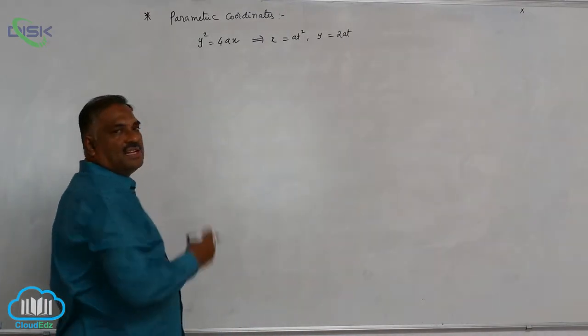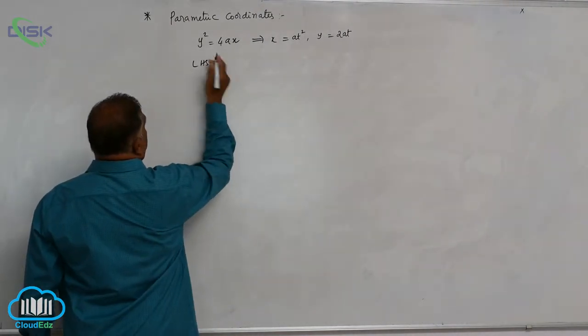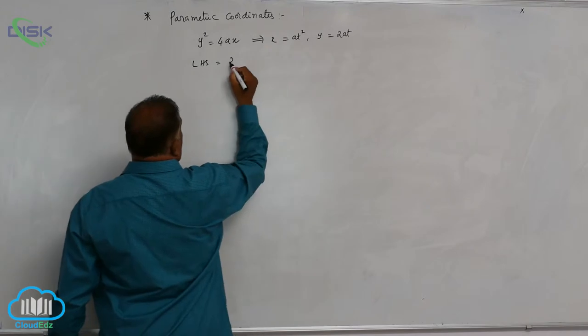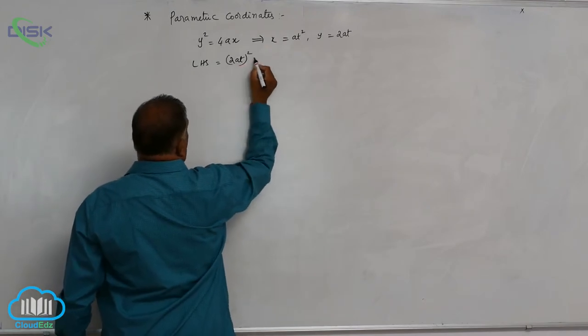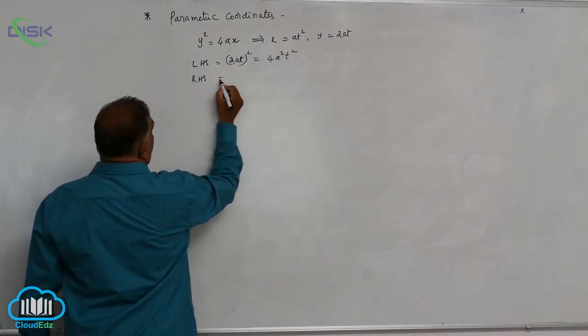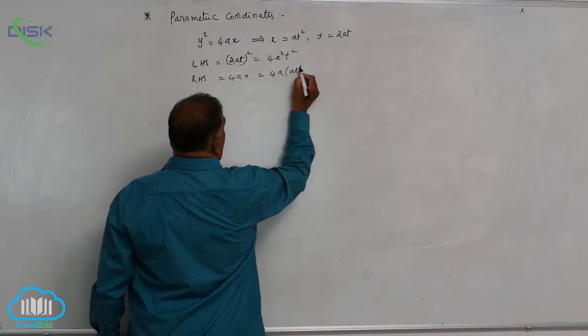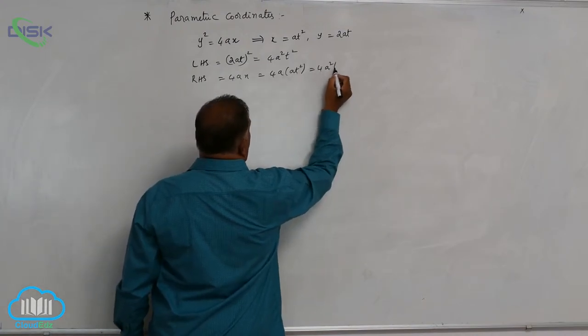These two equations will satisfy. Let us check the LHS part. In place of y, you substitute 2at whole square is equal to 4a square t square. LHS part is 4ax, 4a into at square, that is 4a square t square.